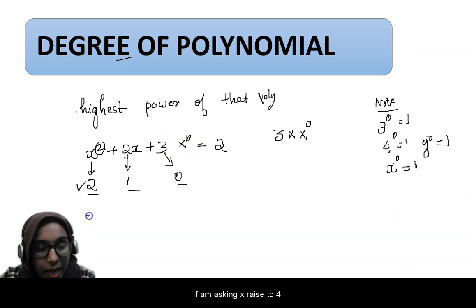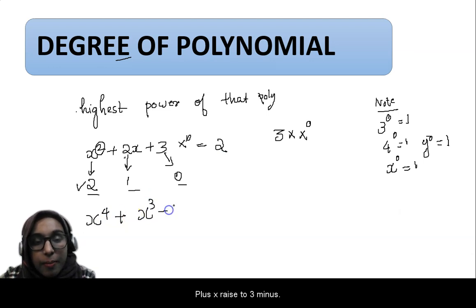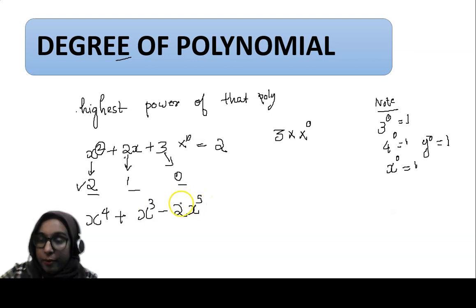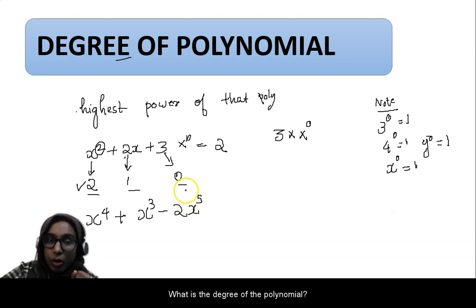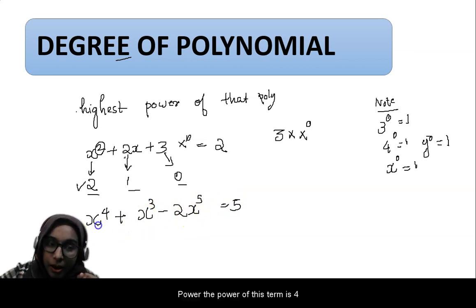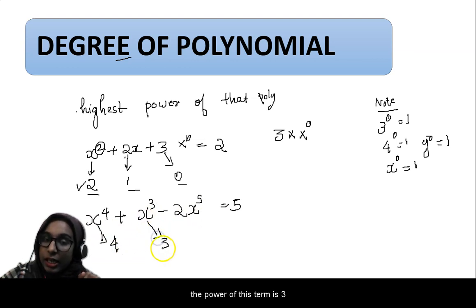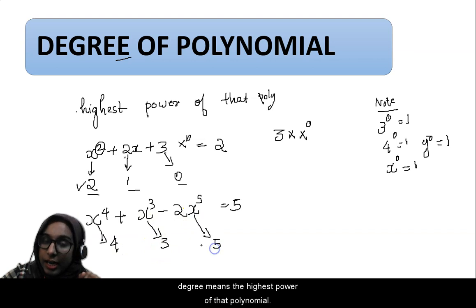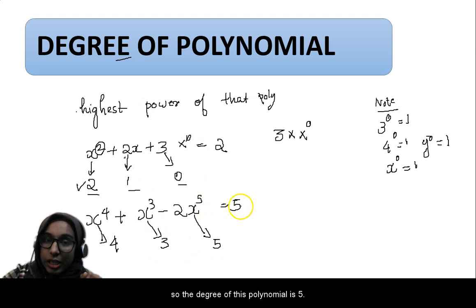For example, x raised to 4 plus x raised to 3 minus 2x raised to 5 — what is the degree of this polynomial? The degree is 5. The power of the first term is 4, the power of the second term is 3, and the power of the third term is 5. Degree means the highest power, so the degree of this polynomial is 5.